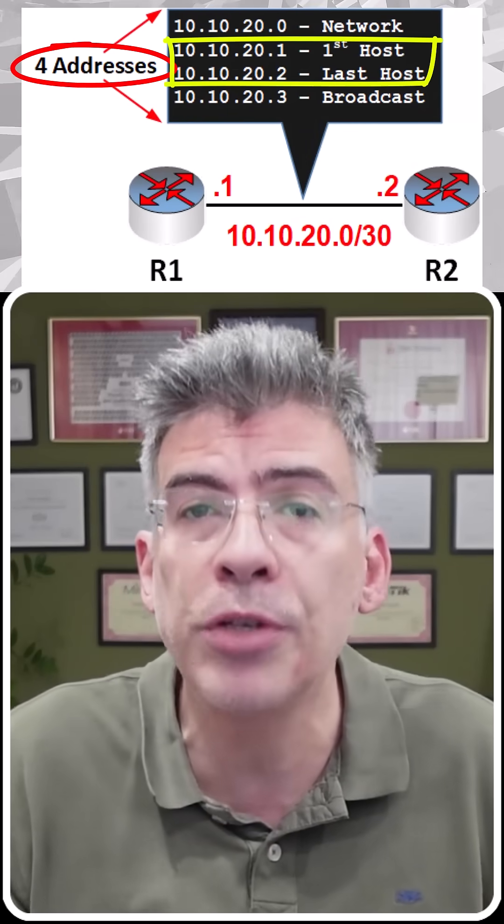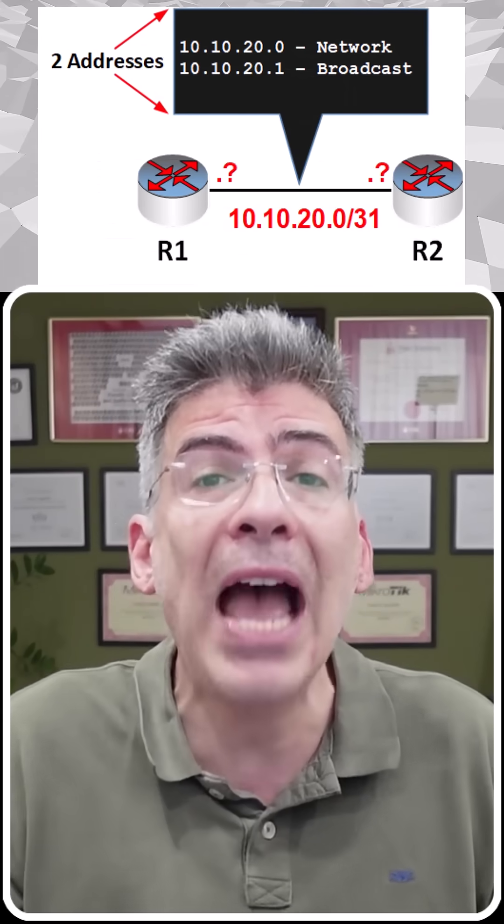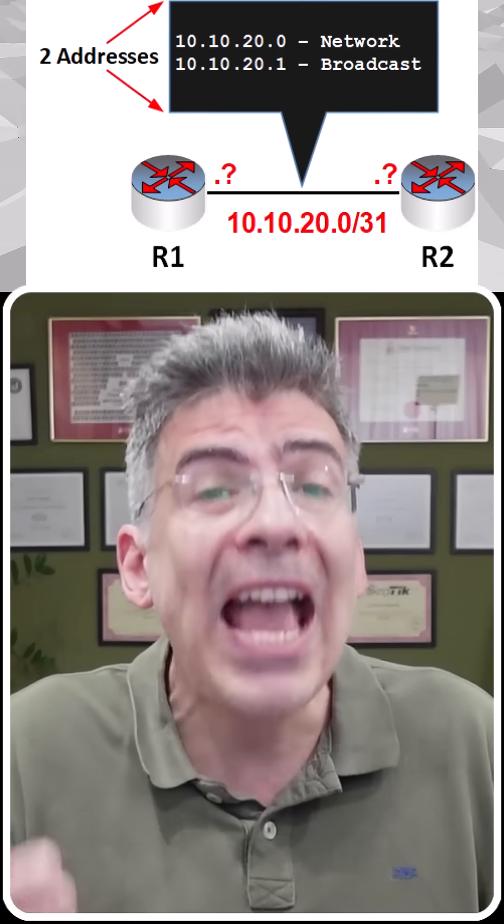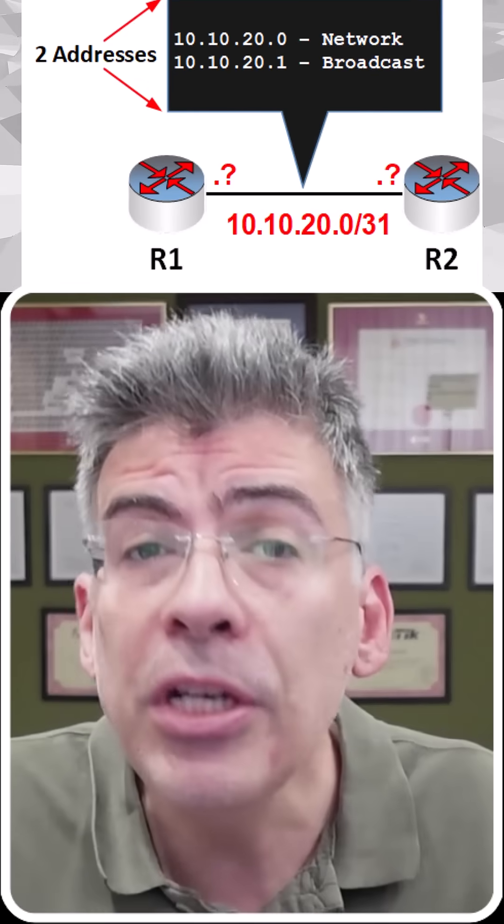But what about a /31 subnet? With such a small subnet, we only have two addresses: the network and broadcast, without any available host addresses. What do we do?